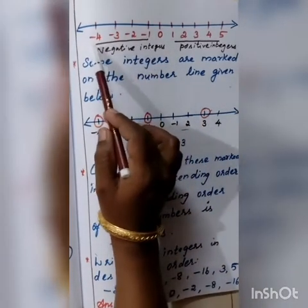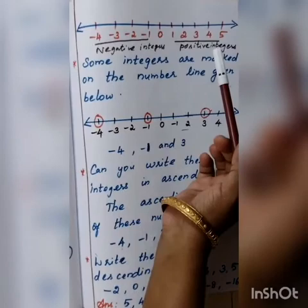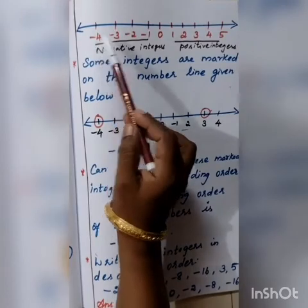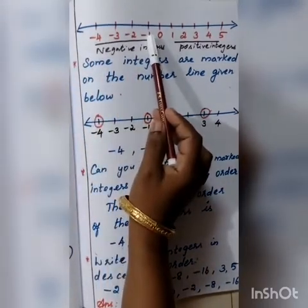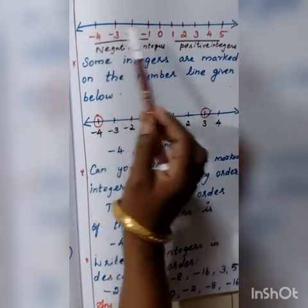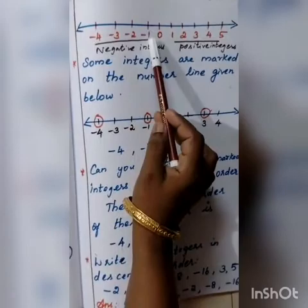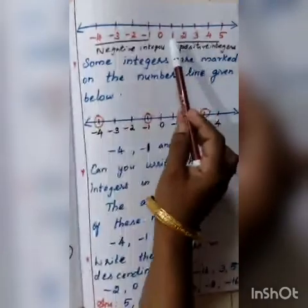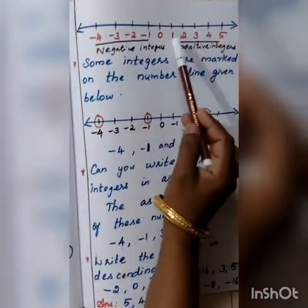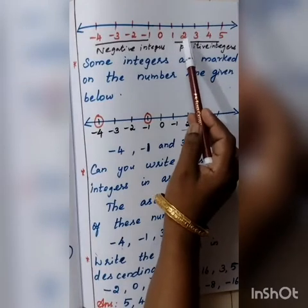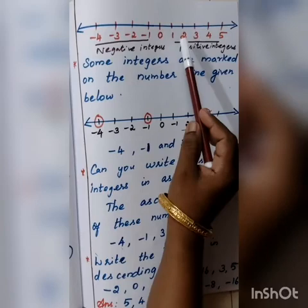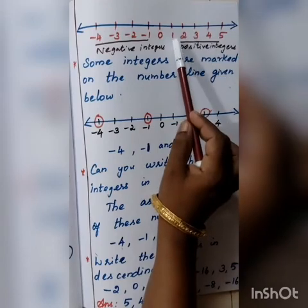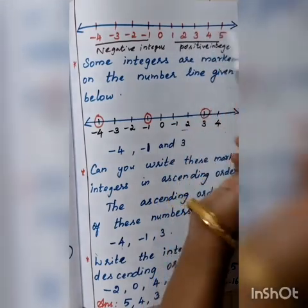Can you say: between minus 4 and minus 1, which one is smallest and which one is biggest? Yes — minus 1 is the biggest and minus 4 is the smallest. This means it is decreasing order. So compare 1 and 5: which one is biggest, which one is smallest? 1 is the smallest and 5 is the biggest — that means it is increasing order.